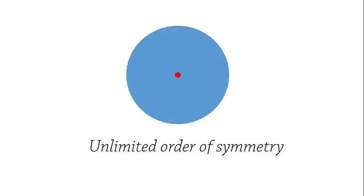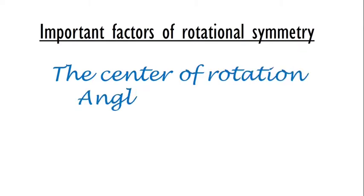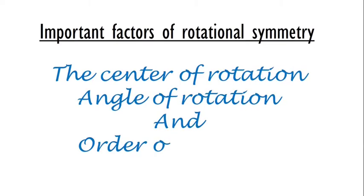Now, there is a special case — that is a circle, with unlimited order of symmetry. Important factors for rotational symmetry are: the center of rotation, the angle of rotation, and the order of rotation.